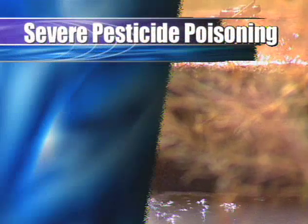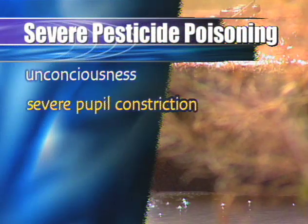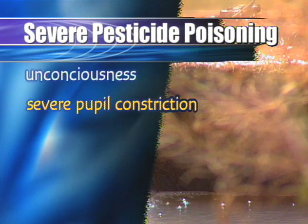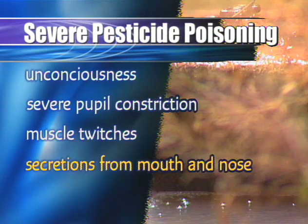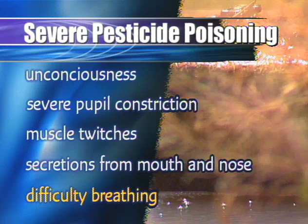With severe poisoning, the person will become unconscious, experience severe pupil constriction, muscle twitches, secretions from the mouth and nose, and difficulty breathing.